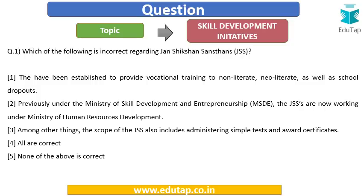Question 1: Which of the following is incorrect regarding Janshikshan Sanstans? Options are: (A) they have been established to provide vocational training to non-literate, neo-literate, as well as school dropouts; (B) previously under the Ministry of Skill Development and Entrepreneurship, the JSS are now working under the Ministry of Human Resources Development; (C) among other things, the scope of JSS also includes administering simple tests and awarding certificates; (D) all are correct; (E) none of the above is correct.